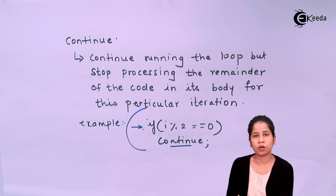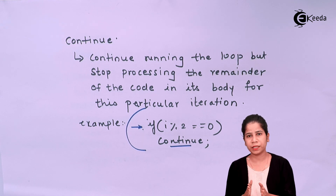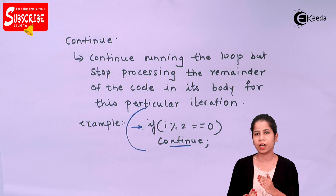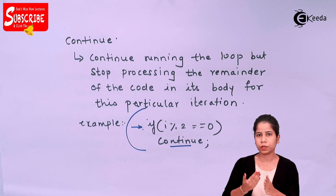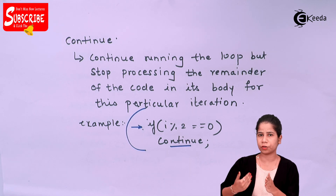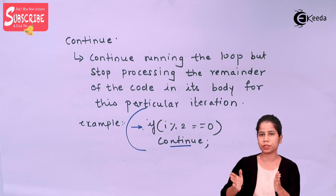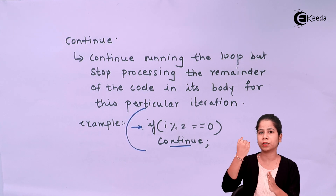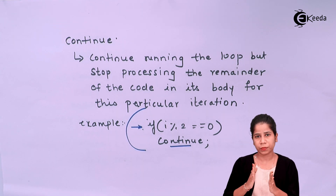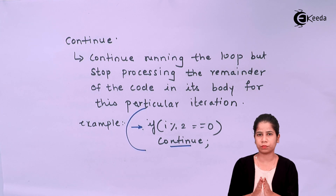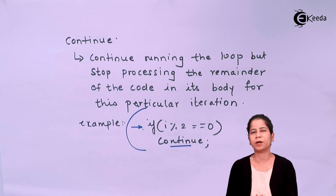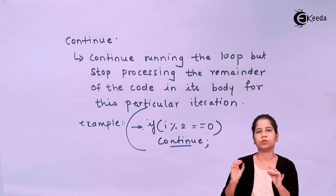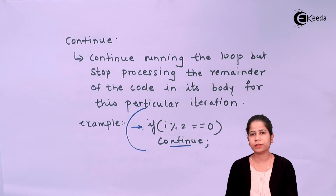The continue statement is one of the jumping statements. Normally a jumping statement allows you to skip a particular part of the code, come out of it, or jump to a particular part. In this case, the continue statement allows you to skip a particular part of the code.